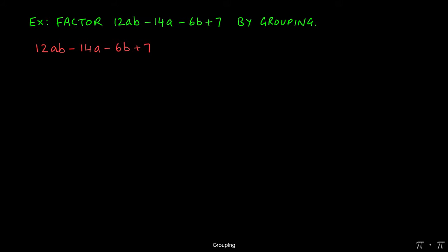From the first two terms, we see that there is a GCF of 2a. When we factor that out, we can divide both the individual terms, 12ab and 14a, by 2a, which would give us 6b minus 7.